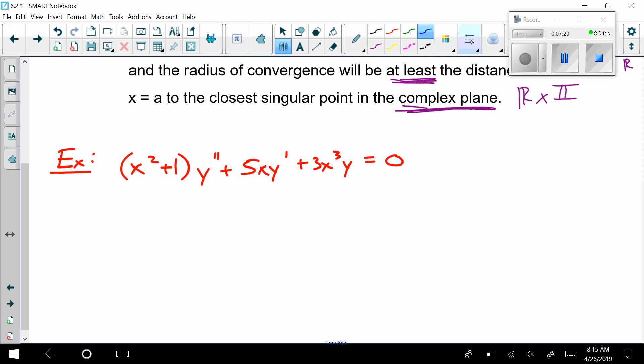All right, so to solve this one here, first I need to try to tackle this. That's my a sub 2 of x. I should be setting it equal to 0. And, of course, then I get x is equal to plus or minus i. So these are the singular points. That means all the other ones are good.